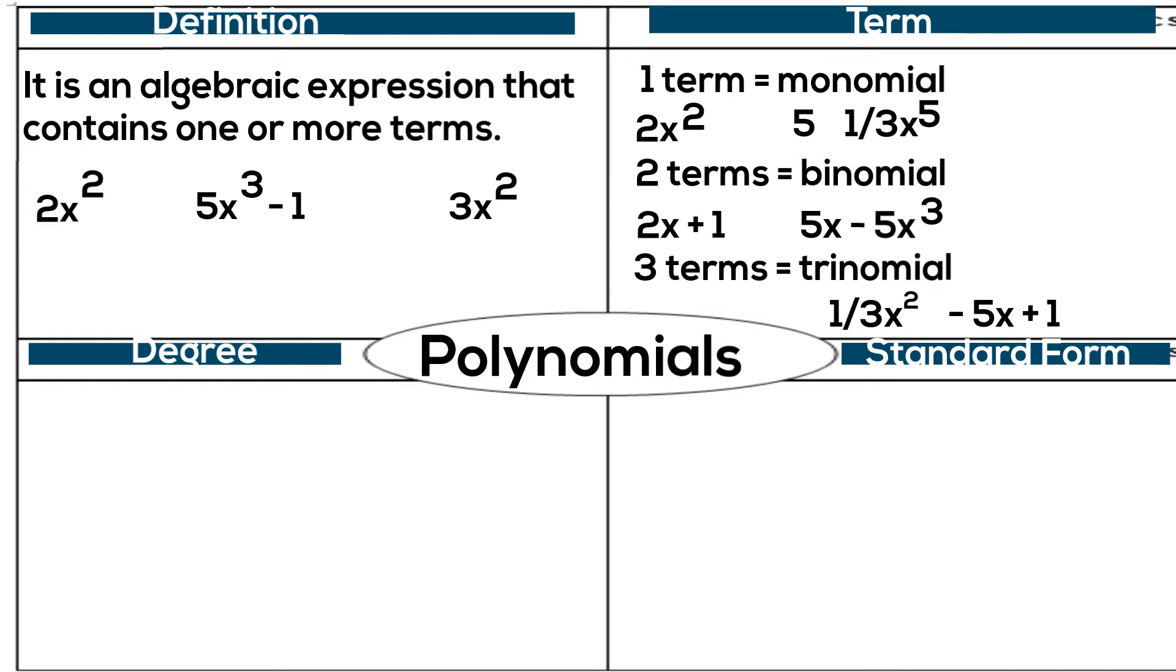Now let's talk about how you define them by degree, and what are the names of polynomials by degrees. For example, if you have just one constant of seven, the degree is zero. The reason it is zero is because there are no variables, so it is considered a constant.